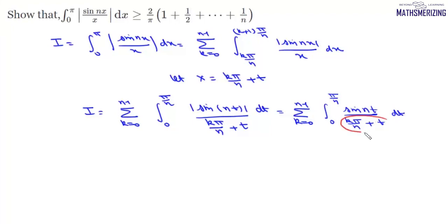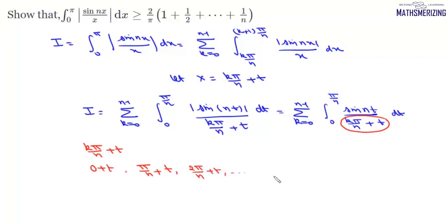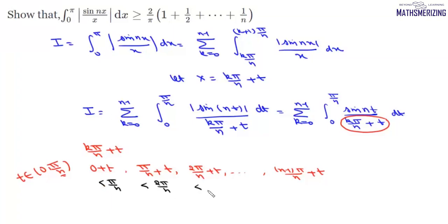Now we look at the expression kπ/n + t. If k = 0 we get 0 + t; if k = 1 we get π/n + t; then 2π/n + t, all the way up to (n−1)π/n + t. Since t lies between 0 and π/n, taking the maximum value of t = π/n, the terms are less than π/n, 2π/n, ..., nπ/n respectively.